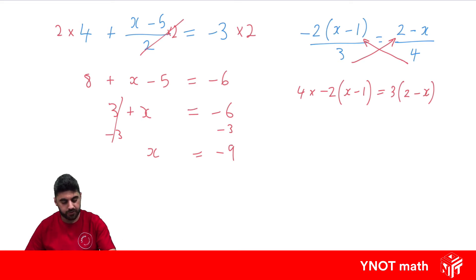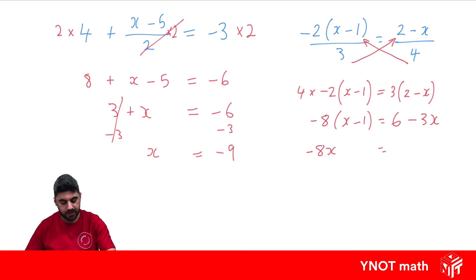4 times minus 2 gives us minus 8 outside of (x minus 1). We can expand the right side straight away: 3 times 2 is 6, and 3 times minus x is minus 3x. Now expanding the left side: minus 8 times x is minus 8x, and minus 8 times minus 1 — careful here — gives plus 8. So we have minus 8x plus 8 equals 6 minus 3x.